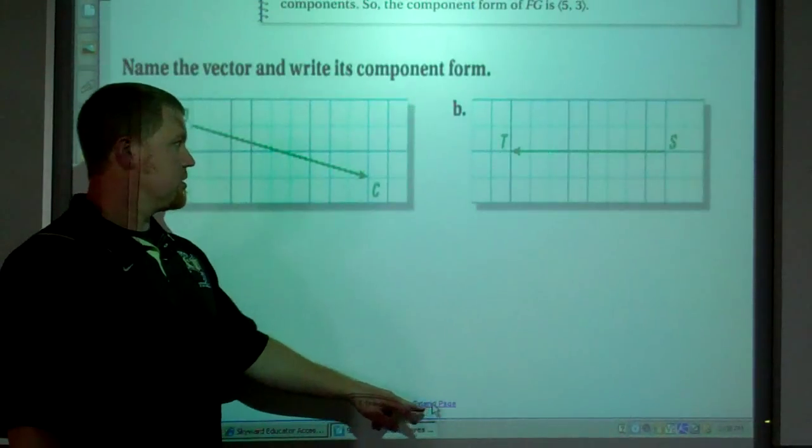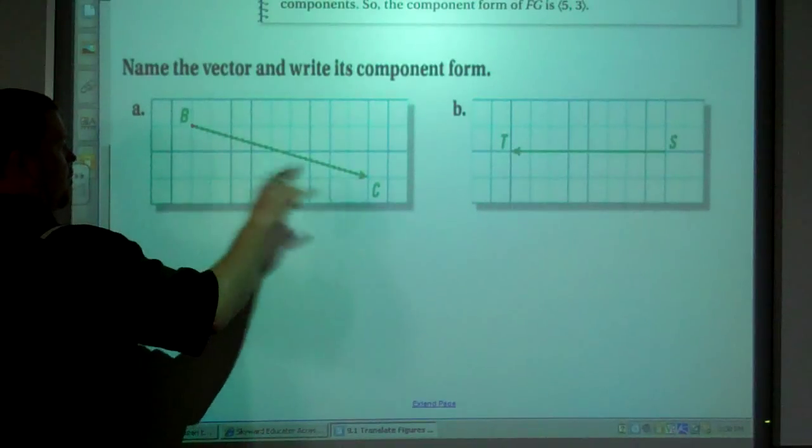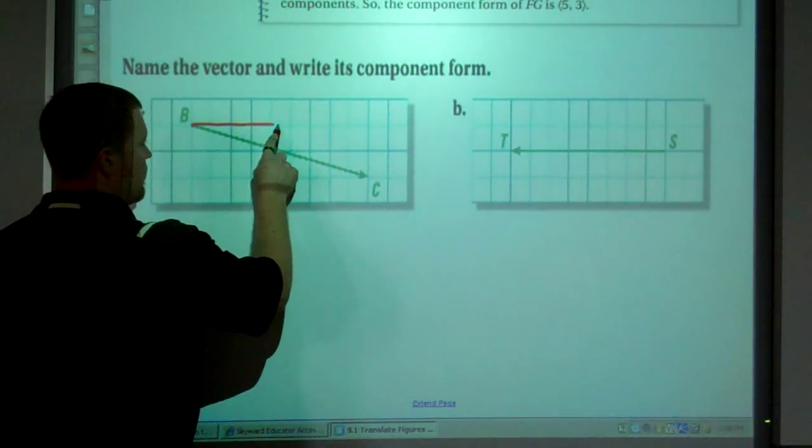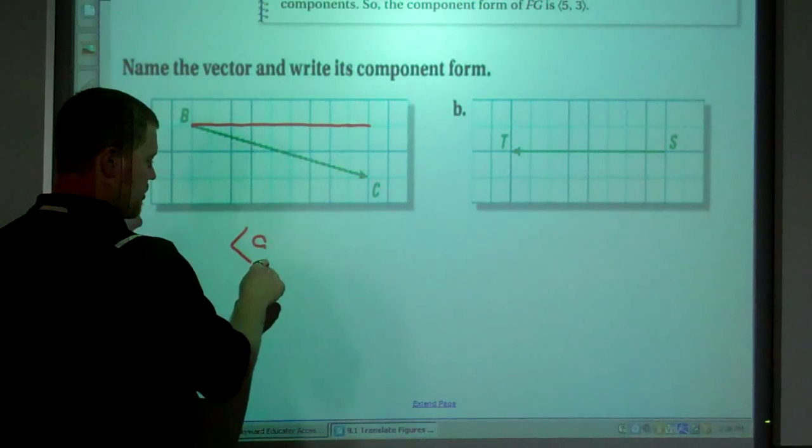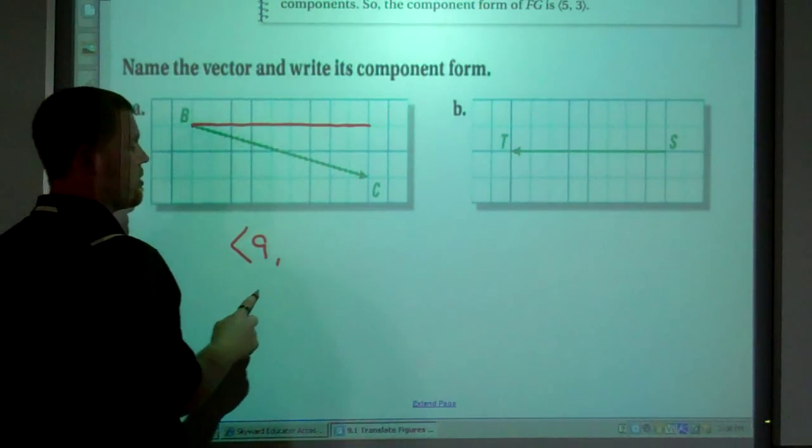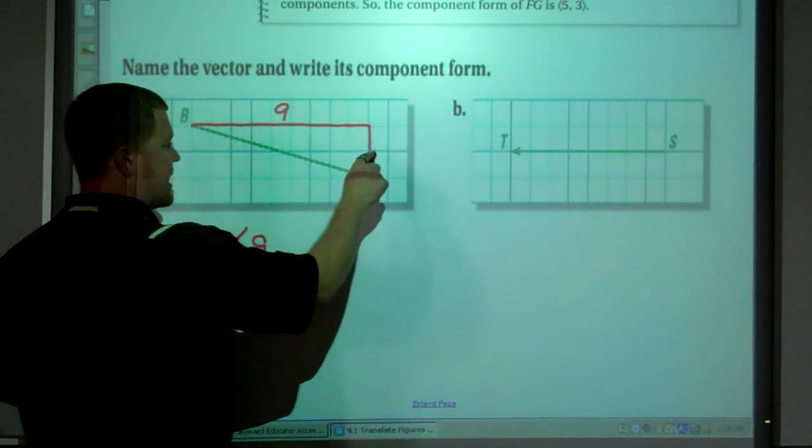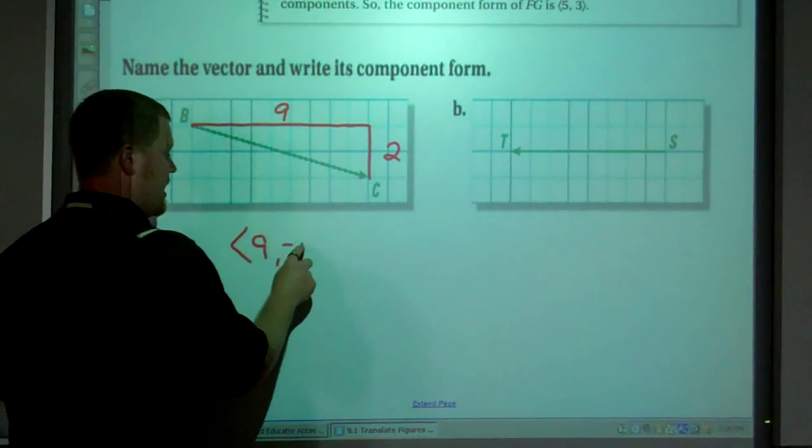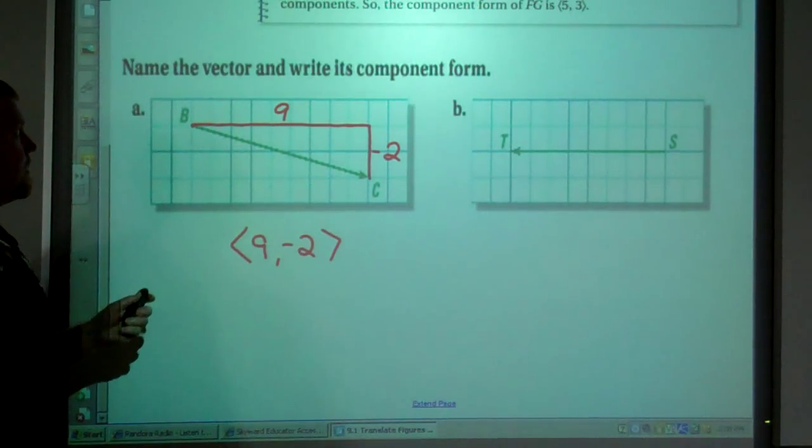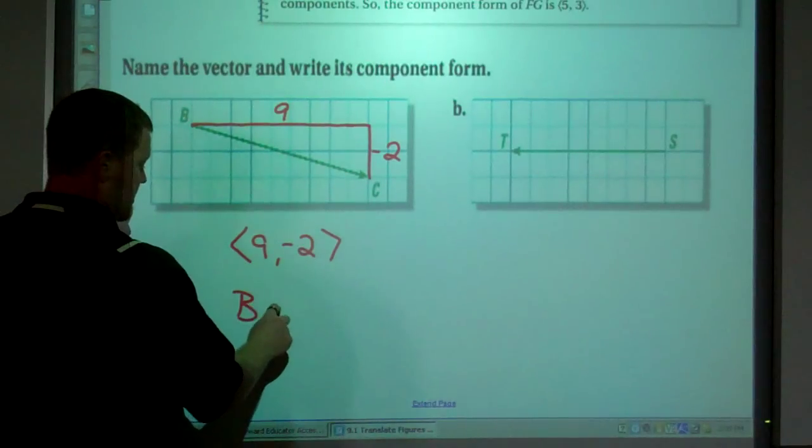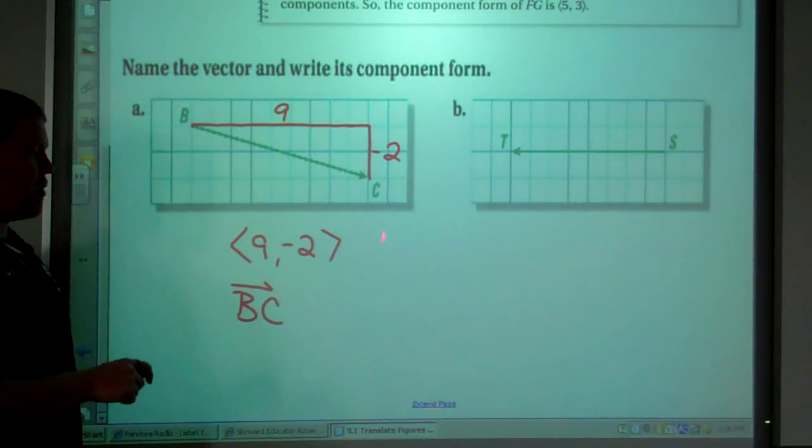We have two vectors here. We're starting. The initial point is point B. And our horizontal component: one, two, three, four, five, six, seven, eight, and nine. So the horizontal component is nine. The vertical component here, we are going down two. Going to the right nine, we're going down two. So in math, when we go down, we associate that with negative, negative two. So the component form of this vector, name the vector, we have vector B, C. Initial point to terminal point. So it's vector B, C. And the component form is nine, negative two.